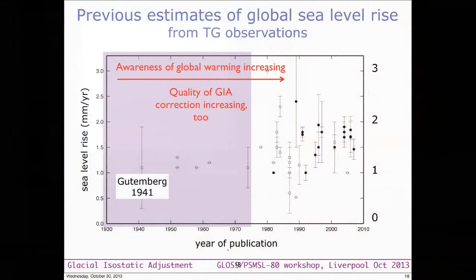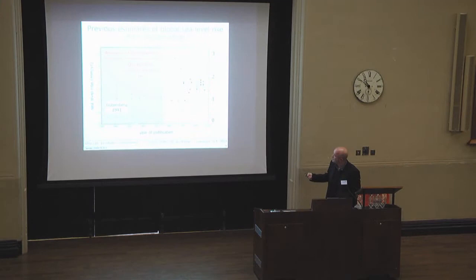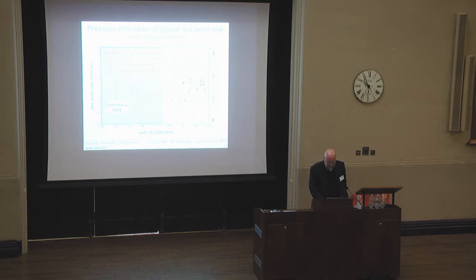Another way to look at the table is to plot all the values. It is interesting to observe that only five to six assessments are available since 1970. Then, with increasing awareness of global warming and probably also improved quality of GIA correction, you had a lot of determinations of this parameter, which is roughly about 1.5 mm per year during one century. But the scatter is quite large, and the error bars in this plot are not the same significance - some of them are root mean square, some others are standard deviations of the mean. So there is some confusion about the meaning of the error that we should attach to these secular sea level variation assessments.